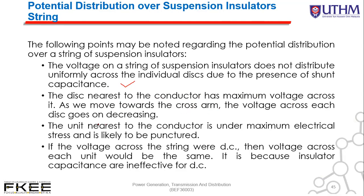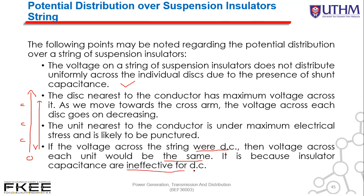As we move toward the cross arm (i.e., from bottom to top), the voltage decreases. The unit nearest to the conductor is under maximum electrical stress and is likely to be punctured first. If the voltage across the string were DC, the voltage across each unit would be the same, because capacitors do not function for DC.